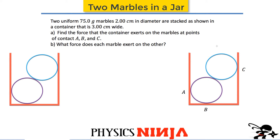Today I want to look at two marbles here in this jar. Both marbles have the same mass - they're identical, just different colors to make it a little bit clearer - and they both have a mass of 75 grams. They both have the same diameter of two centimeters, and they're stacked on an angle in a container that is three centimeters wide. The basic question is: what are all the contact forces at points A, B, and C, and also what's the contact force between the two marbles?